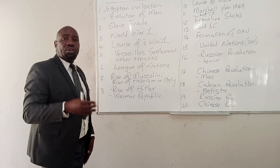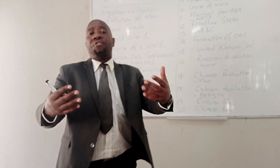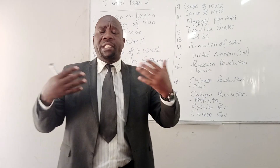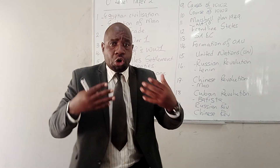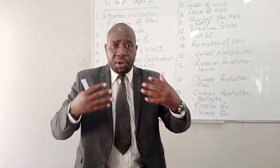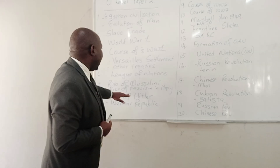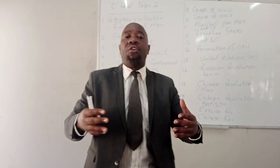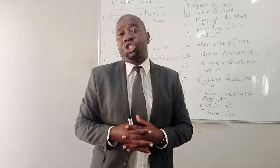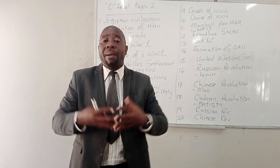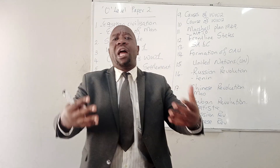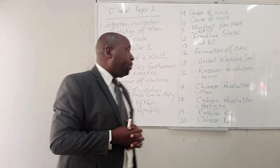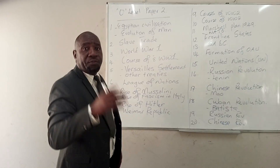Number seven, they can ask you about the rise of Mussolini — the rise of fascism in Italy. What happened in Italy after World War One? They can ask you about the rise of Mussolini, his domestic policies, and his foreign policies. Number eight, they can ask you on the rise of Hitler — what took place in Germany after World War One. We talk about the way the Weimar Republic was introduced, the rise of Hitler, his domestic policies, and also his foreign policies.